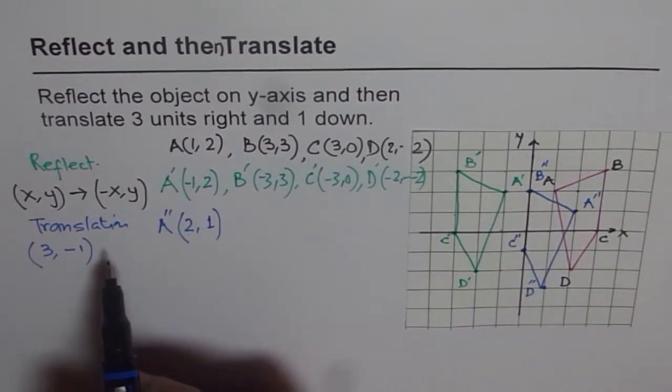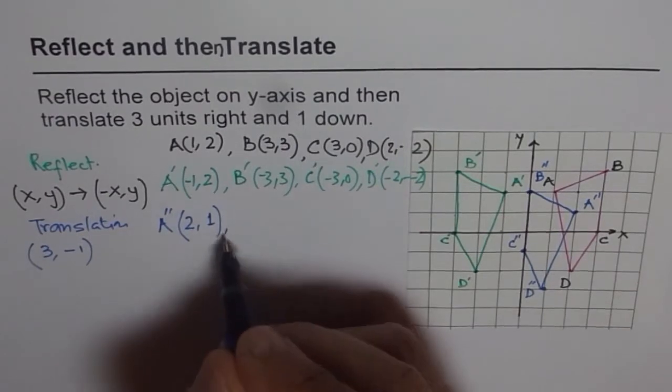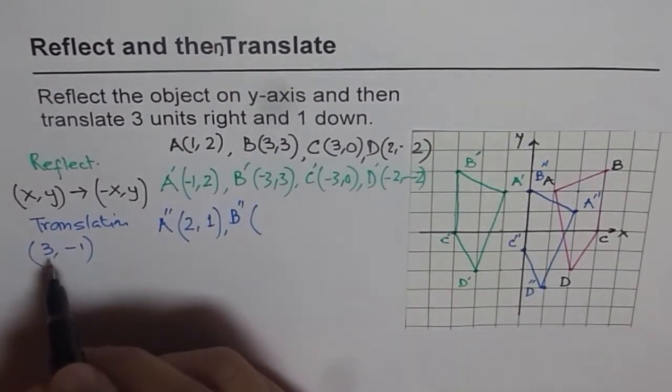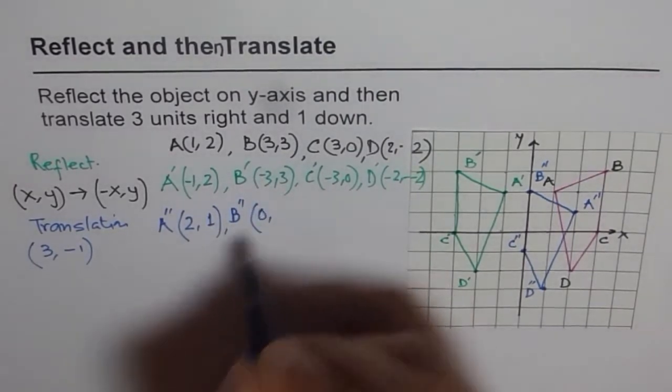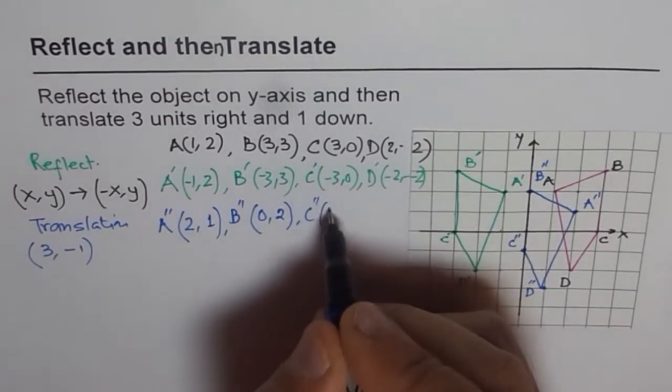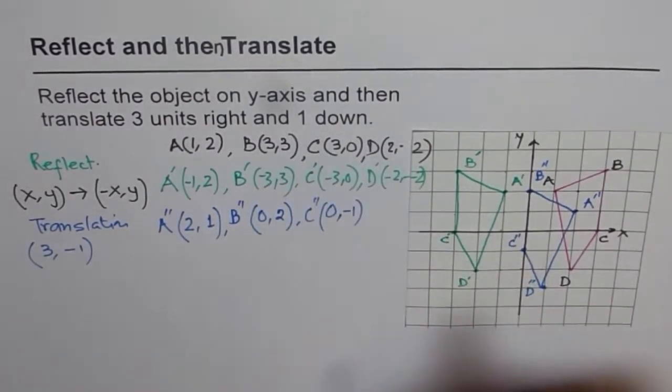And the one with which I did first is geometrical method, right? Let's complete these values for the coordinates. B double dash, so you add 3 to it, becomes 0, minus 1 will give us 2. For C double dash, when you add 3, it becomes 0 and minus 1 will give me minus 1.